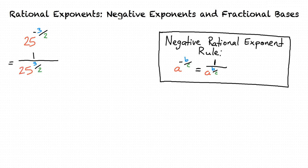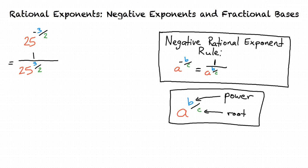Now I have to simplify the denominator. How exactly should I do that? We have to figure out 25 to the 3 halves power. In a rational exponent, the numerator is a power, and the denominator is a root. So in our case, the denominator of 2 means a square root, and the numerator of 3 means the third power.